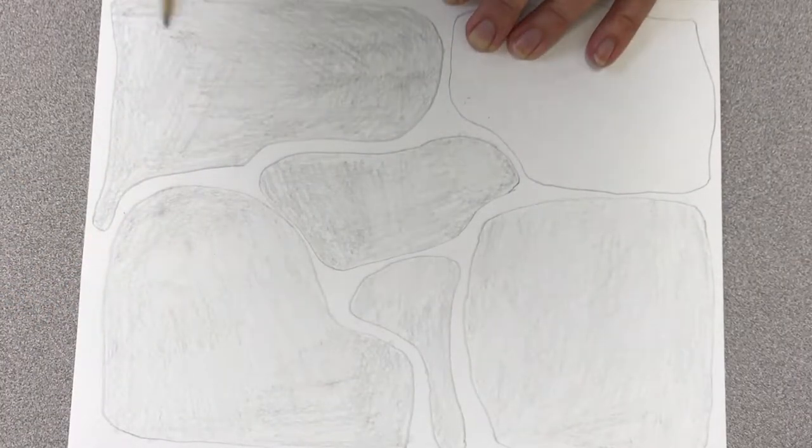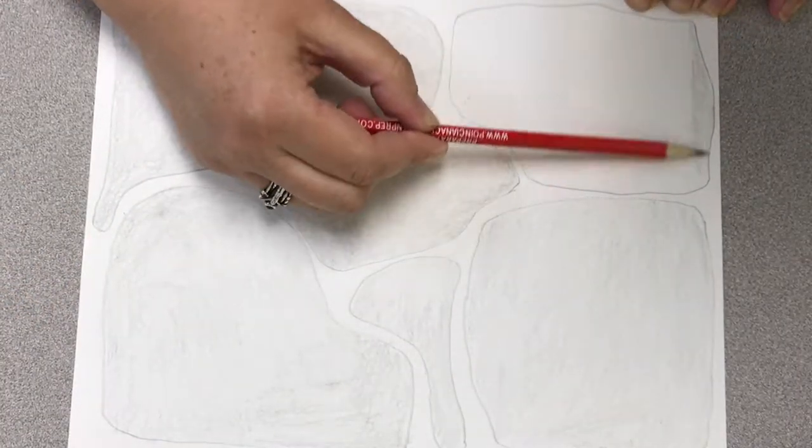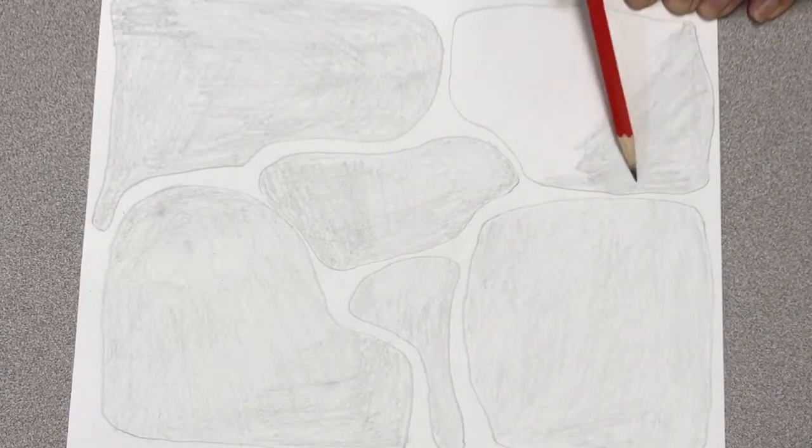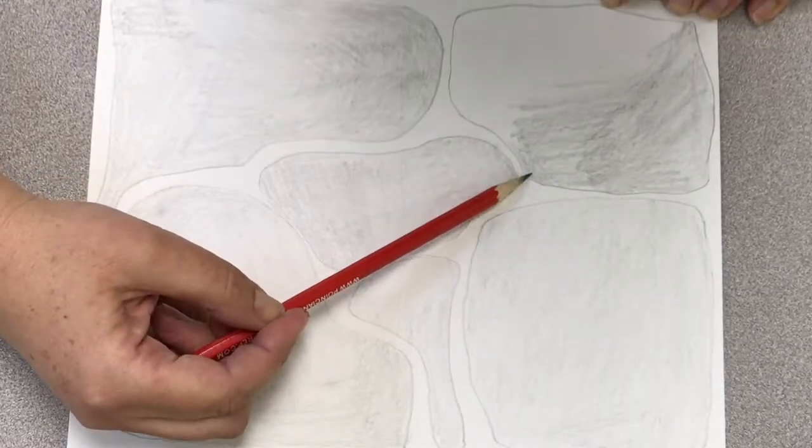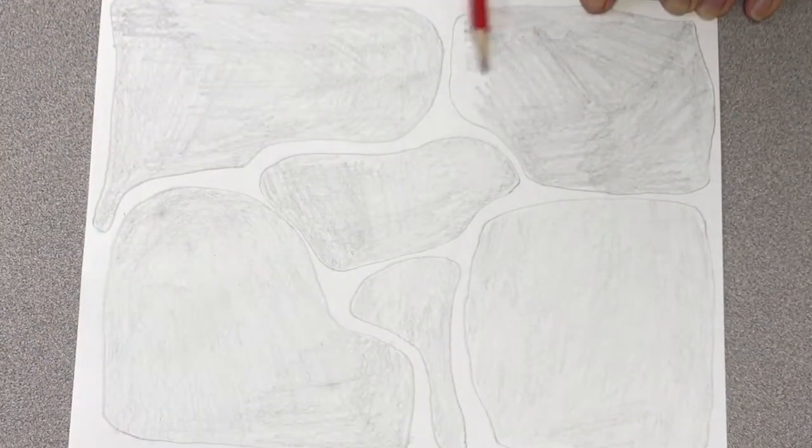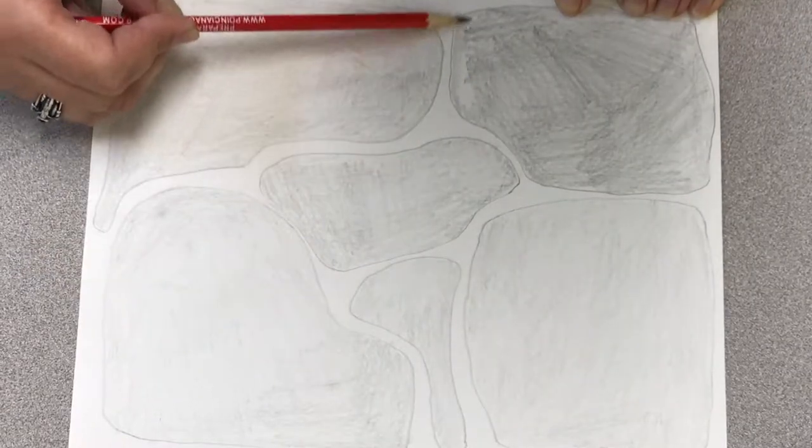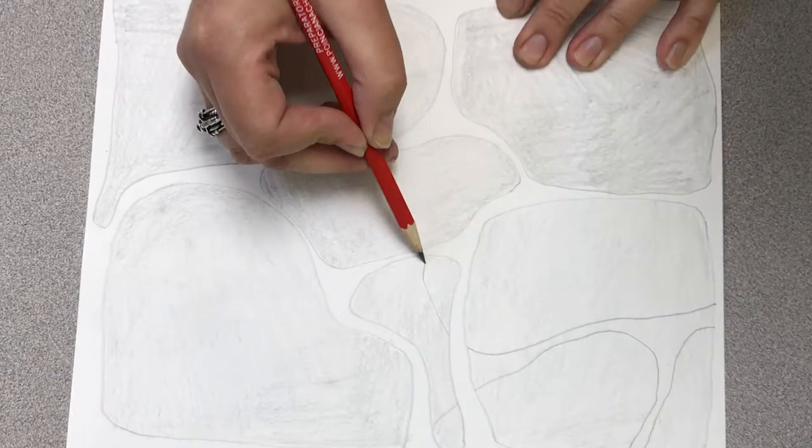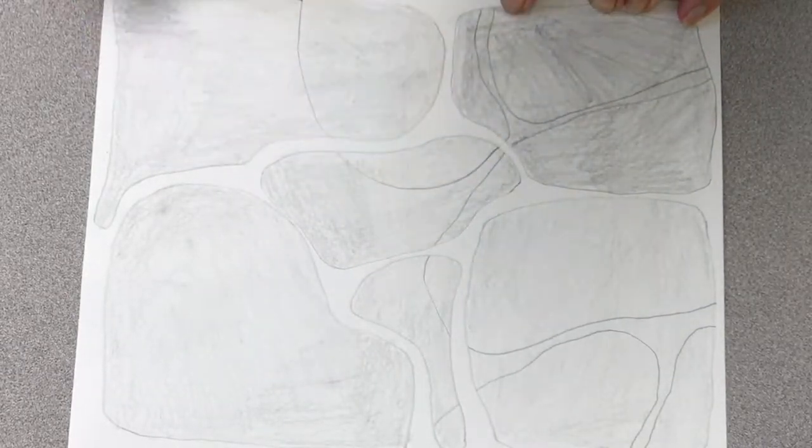One more shape to fill in and then we can start on our next value. When you're using pencil as a medium, it's easier to go from light to dark because it's always easier to make something darker, but it's more difficult to make it lighter.